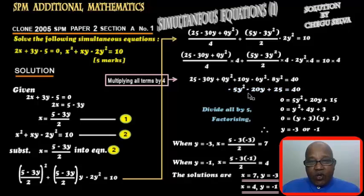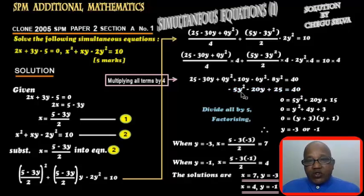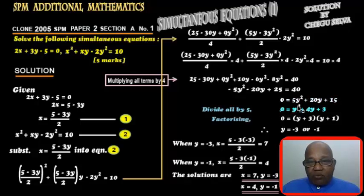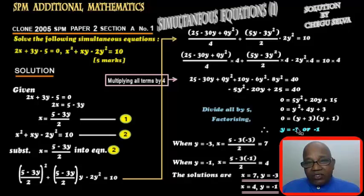We get negative 5y squared minus 20y plus 25 equals to 40. For factorizing purposes, make sure the coefficient of y squared is positive, so we move everything to the right: 0 equals to 5y squared plus 20y plus 15. Divide all terms by 5: 0 equals to y squared plus 4y plus 3. Factorizing gives 0 equals to (y plus 3)(y plus 1), so y equals to negative 3 or negative 1.